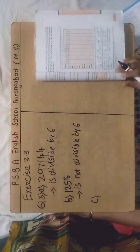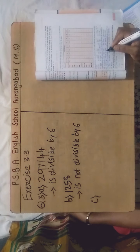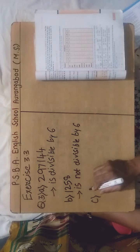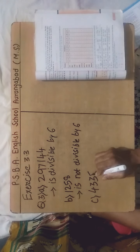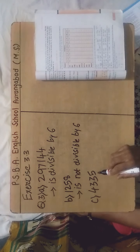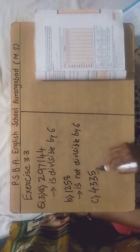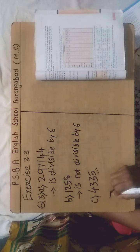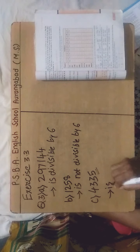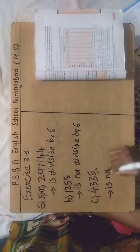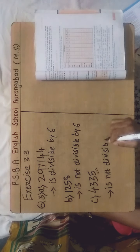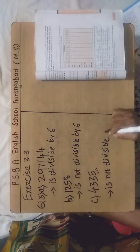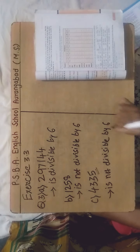Sub-question C is 4,335. It is having 5 at its ones place, therefore it is not divisible by 2. Therefore the above number is not divisible by 6.